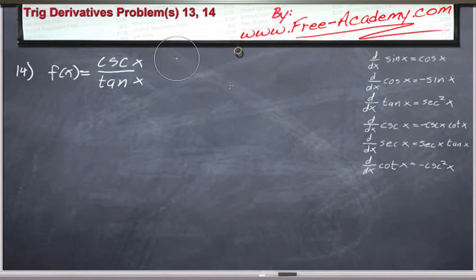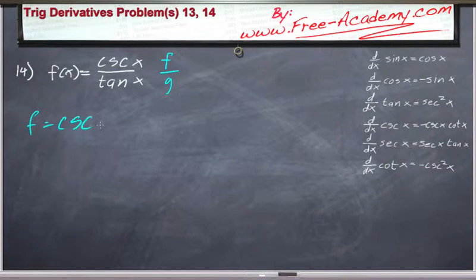So that means we're going to actually want to do this derivative by having f equal to cosecant of x and g equaling to tangent of x. Now, if it makes you feel any better, I knew we were going to run into that snag before I started doing that.